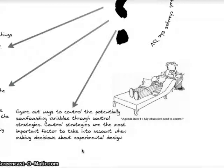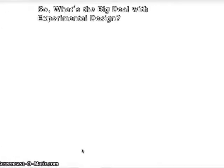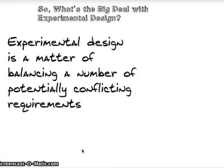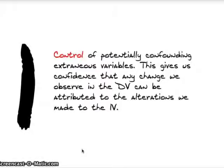Control strategies are the most important factor we take into account when designing an experiment. Experimental design is a matter of balancing a number of potentially conflicting requirements — I go with four. The first is control: you've got to control the potentially confounding extraneous variables, otherwise your results will be completely invalid. You might conclude something that's actually true, but you would do so for no good reason, and therefore your results would not be admitted as evidence.